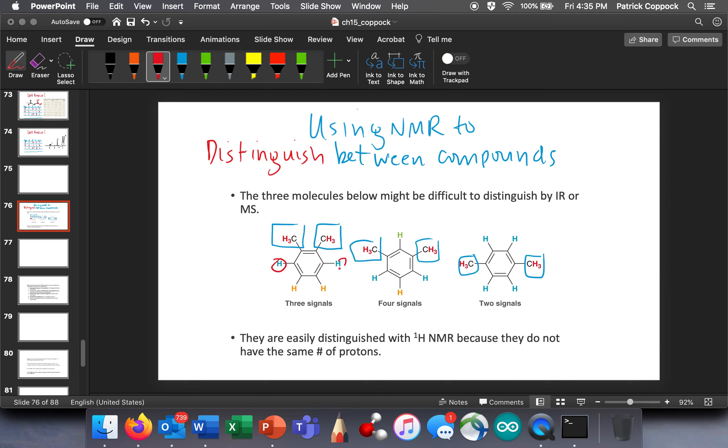You see the blues are similar. That's going to be one kind of hydrogen because they're right next to a methyl group. The oranges are similar, so that's another group. There's one group, here's another group, and here's another group. So there's six hydrogens here, there's two hydrogens here and two hydrogens here. So you'll have three signals.